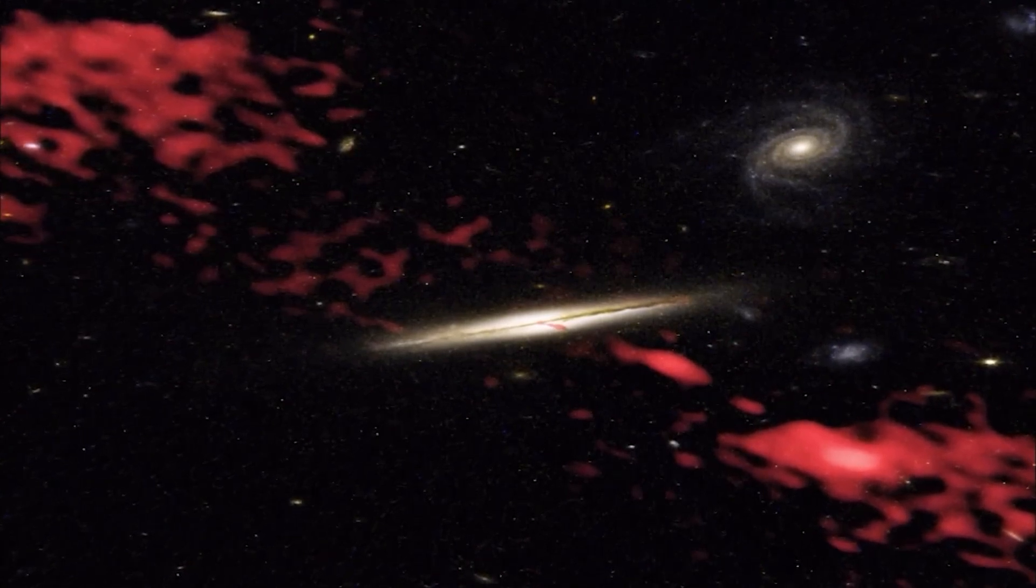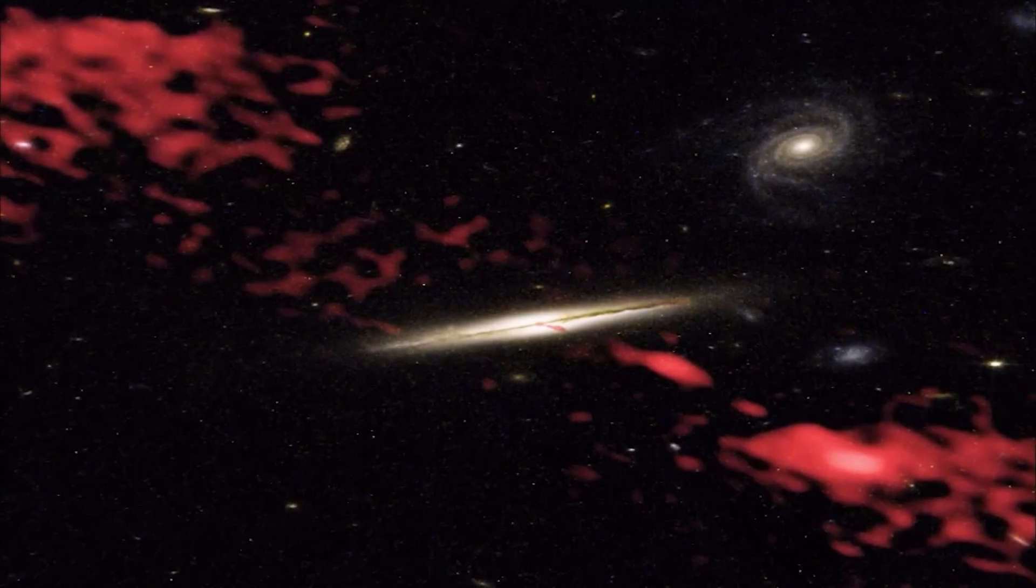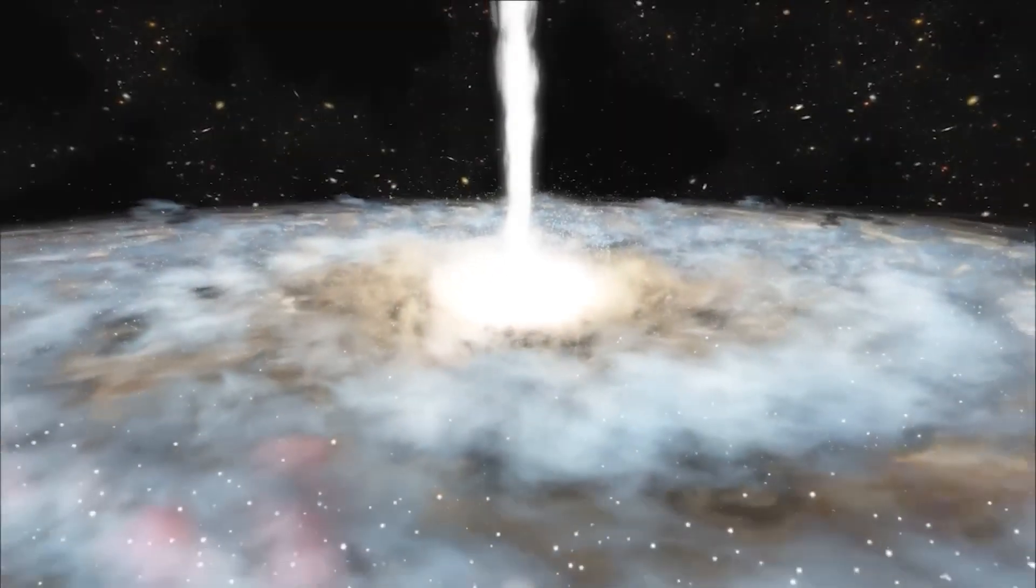Some scientists suggest that instead of the singularity, there could be another event horizon inside the black hole, leading to a world with different physical rules. This idea implies that our universe is nested inside a black hole, which in turn could be inside another universe.